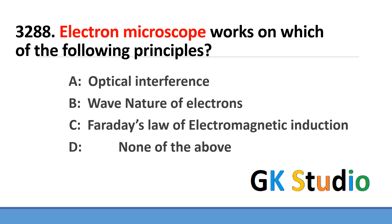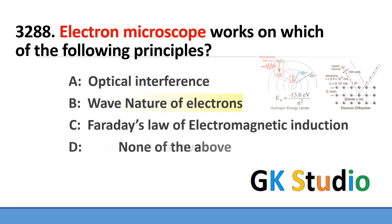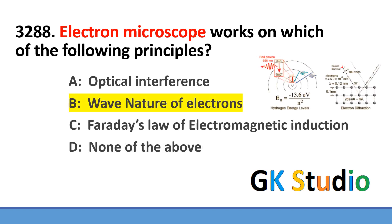The electron microscope works on which of the following principles? The basic principle of the electron microscope is the wave nature of electrons.